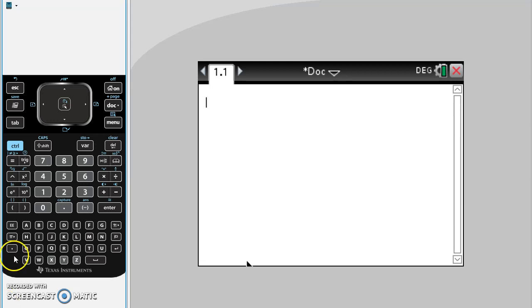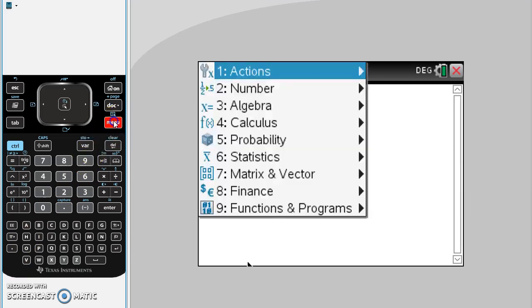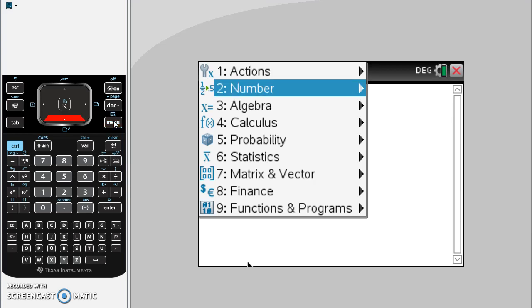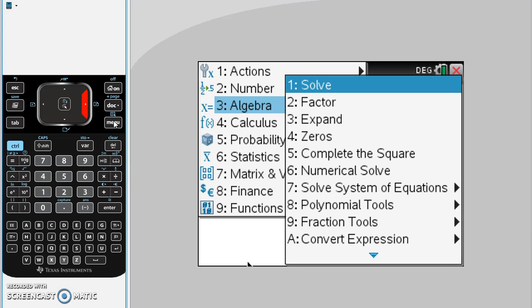To start with we'll press the menu button and then we'll want algebra. So we could press the number 3 or we could use the mouse or we could use our arrows to go down to algebra and across.